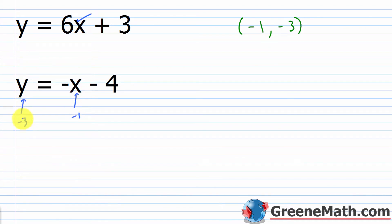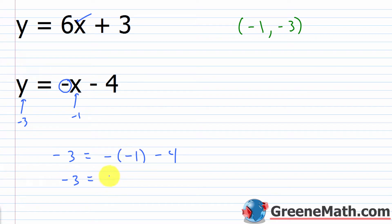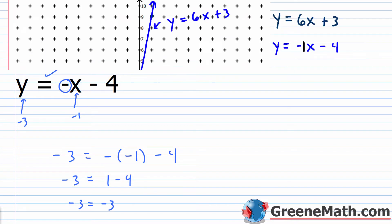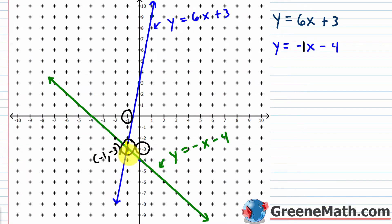For the second equation y = -x - 4, plug in x = -1 and y = -3: negative 3 equals the opposite of negative 1 minus 4, which is 1 minus 4 equals negative 3. So negative 3 equals negative 3 — it works here as well. We've found a solution for the system because it works in both equations. When solving graphically, we look for the point of intersection because it lies on both lines and satisfies both equations.